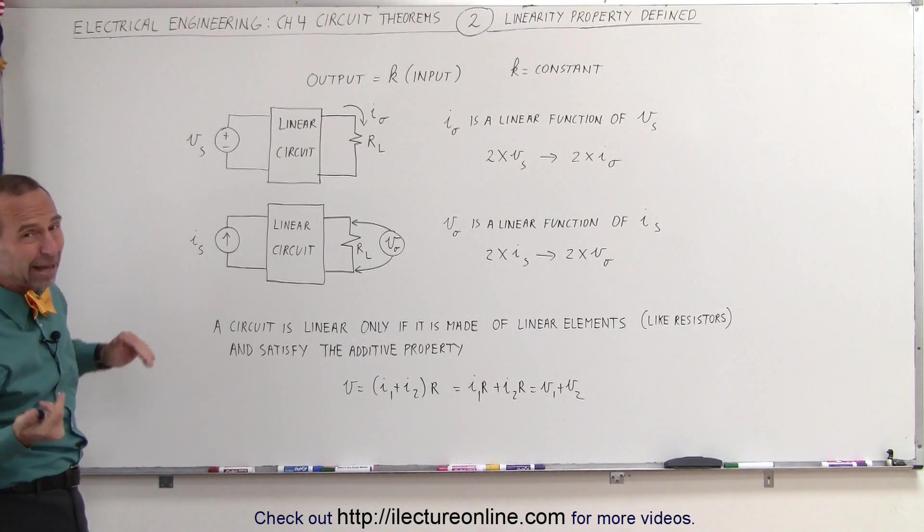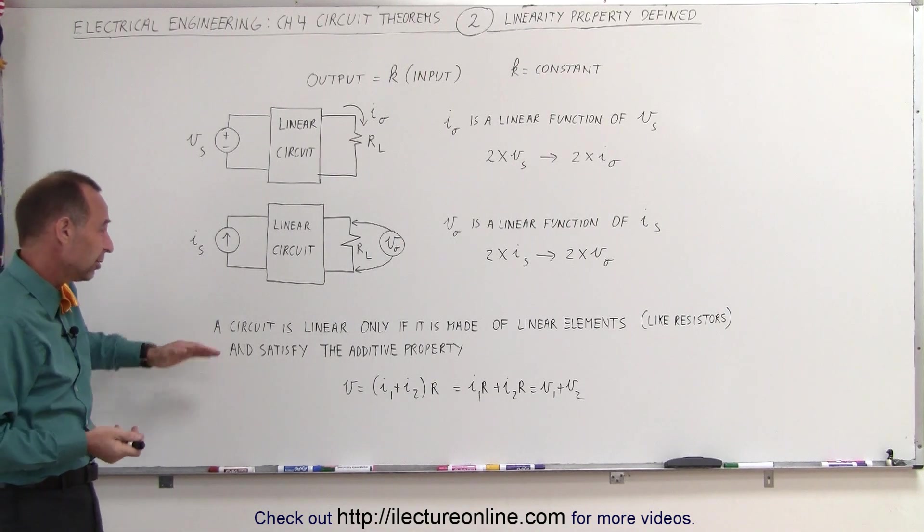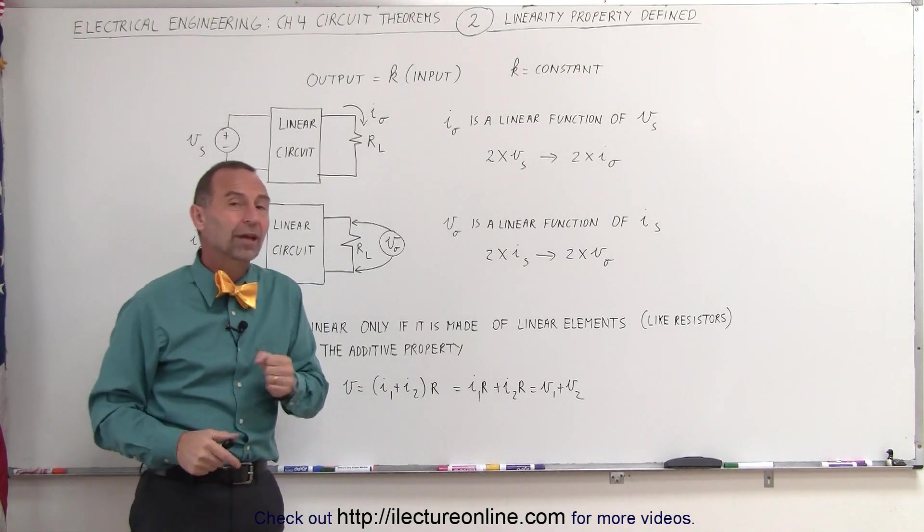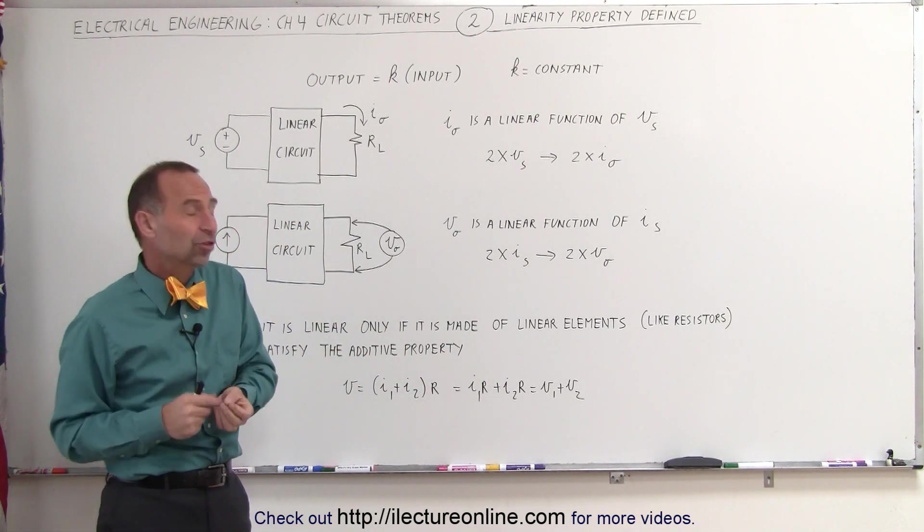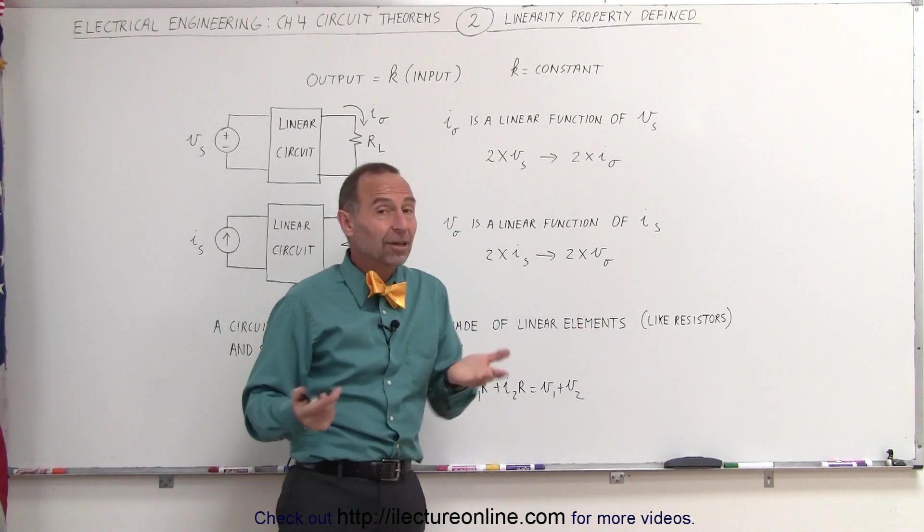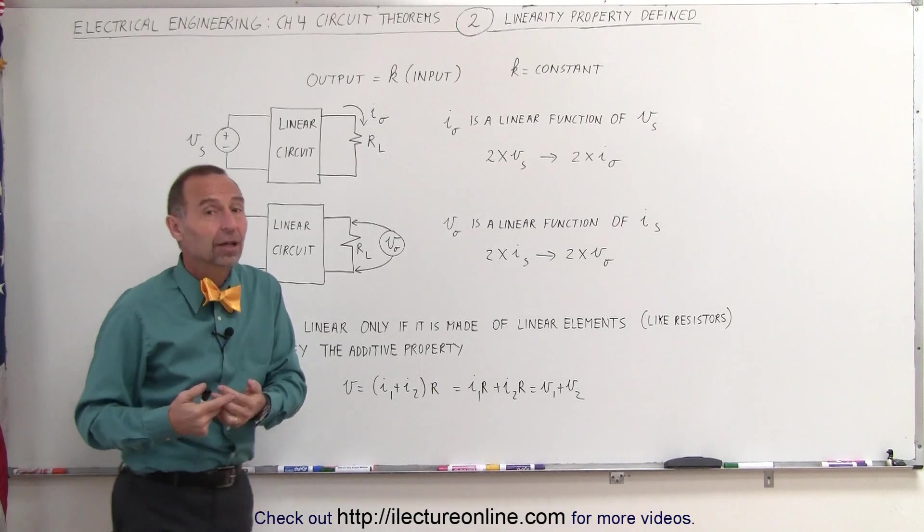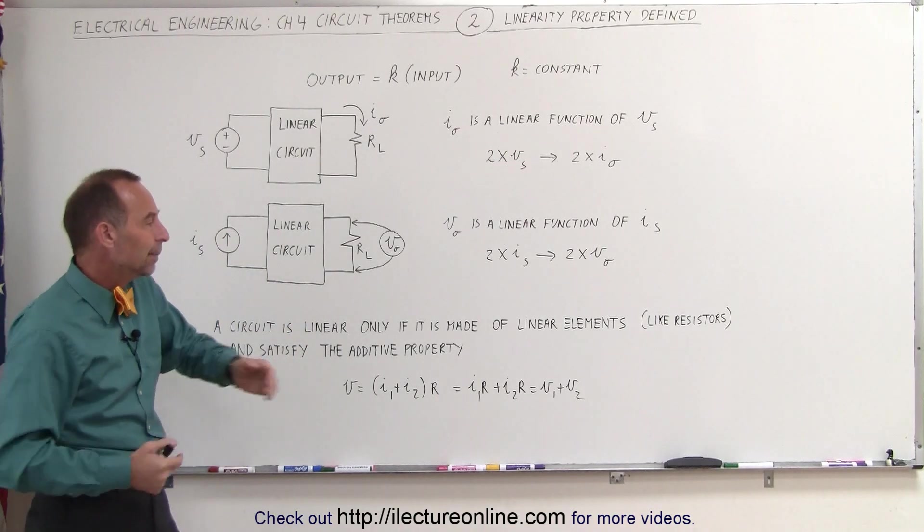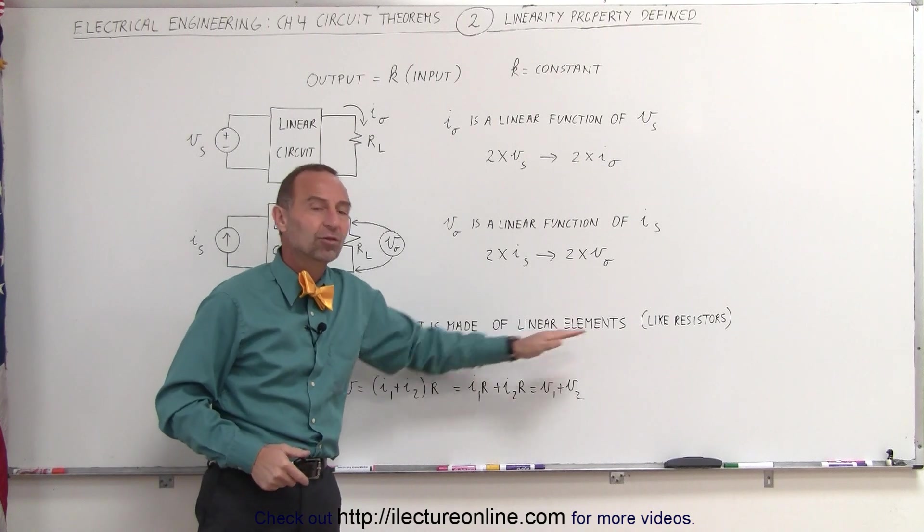You may ask the question, what is a linear circuit? A circuit is linear only if it's made up of linear elements that allow direct proportionality. Resistors are a perfect example of that. Inductors and capacitors are not necessarily linear components because the current through them will change over time. That's not the case with resistors.